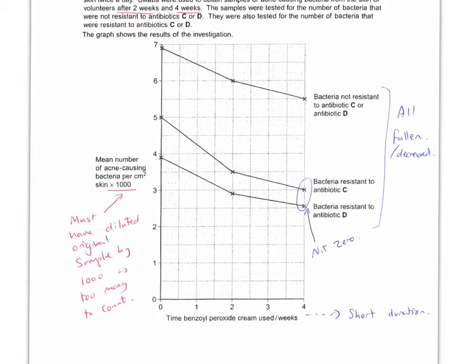Okay, so let's go through the questions then. So, question two. Which antibiotic is most affected by benzoyl peroxide? So, it's C. Because the numbers fall the most. You could, ideally, you do a percentage change. So, you've gone from five to three. So, the difference is two divided by five times 100. And that is more than the percentage drop for D.